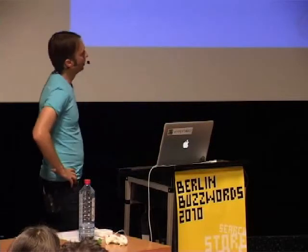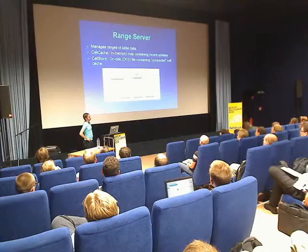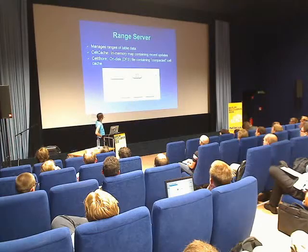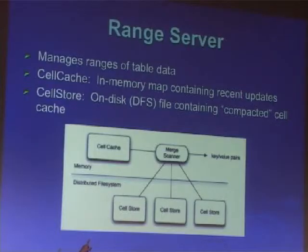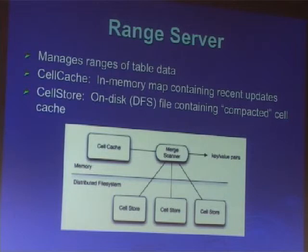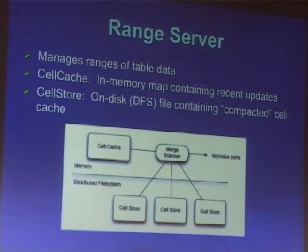To execute a query, this is essentially what happens: the query comes in, there's a merge scanner abstraction inside the range server, and it merges the cell cache — which is the in-memory data structure — and then all the on-disk cell stores does a heap merge. That gives it a unified view of the data.